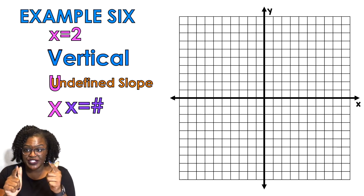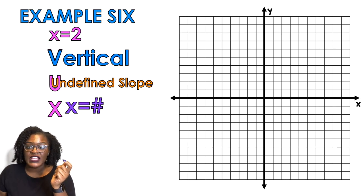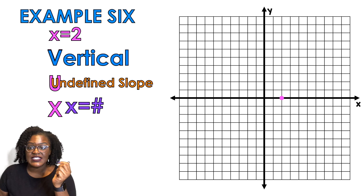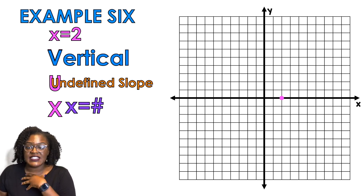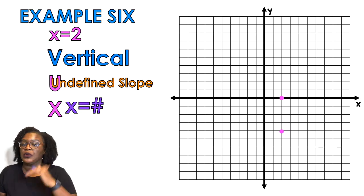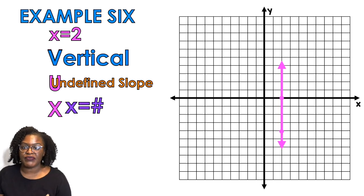And then I know vertical lines go up and down, so that means I'm just gonna plot a point somewhere up or down, doesn't even matter, and then I should just draw my line through those two points. Bada bing bada boom baby.